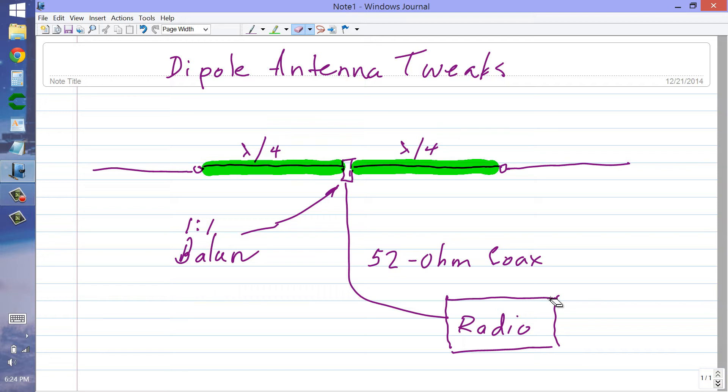But what I'd like to talk about here is the basic dipole antenna and how you can tweak it to make it do its best job. The basic antenna comprises two equal legs, one quarter of a wavelength long electrically.